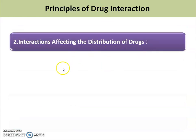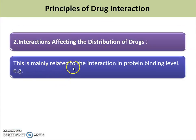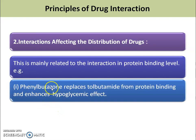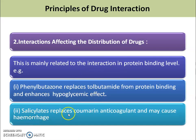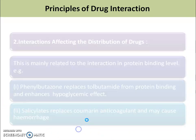Interaction affecting the distribution of the drug may be related to interaction at the protein binding level. For example, phenylbutazone replaces tolbutamide from protein binding and enhances the hypoglycemic effect. Also, salicylate replaces coumarin anticoagulant and may cause hemorrhage. That is why the salicylate and coumarin combination is not preferred.